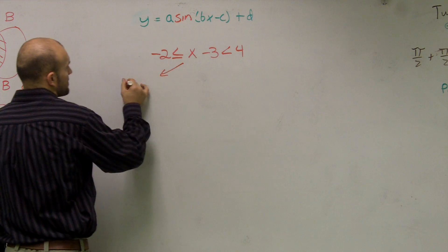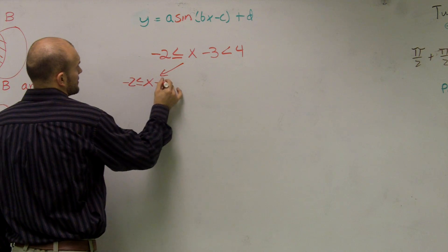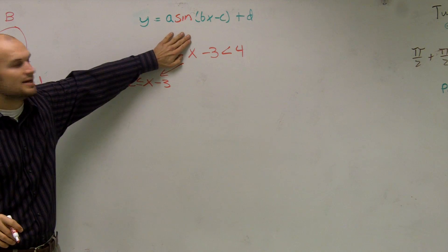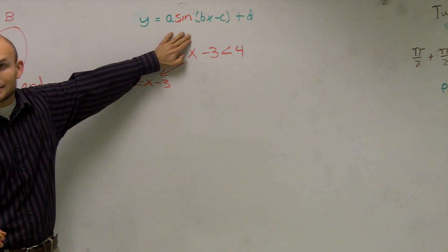So I'll write that right here. Then to write the other inequality, I cover up the other side, and I see I have x minus three is less than four.